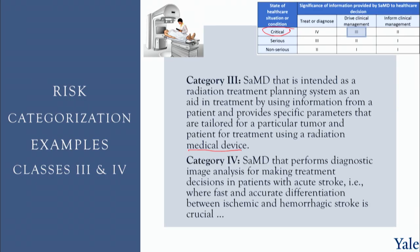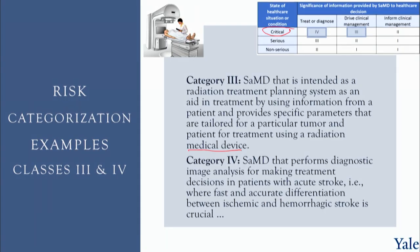In Class 4, here is a stroke case. The software performs diagnostic image analysis for making treatment decisions in patients with acute stroke. We must differentiate between ischemic stroke — loss of blood flow — and hemorrhagic stroke — bleeding inside the brain — and take appropriate action. This is Class 4: the software output is directly used for treatment or diagnosis determination in a critical, life-threatening condition, placing it at the high end of the spectrum.